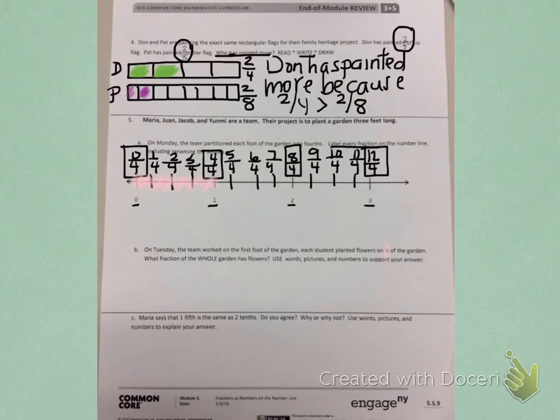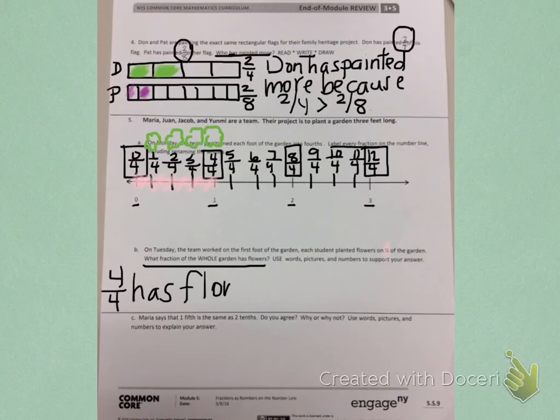They put flowers on every fourth of the garden. So, I'm going to draw on the number line where they put those flowers. They put a flower on one-fourth, they put a flower on two-fourths, they put a flower on three-fourths, and they put a flower on four-fourths. If I look back at my question, it asks, what fraction of the whole garden has flowers? When I look at my picture, I see four-fourths has flowers.